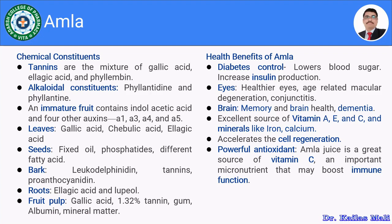Amla decreases blood sugar levels, possibly by increasing the production of insulin. Regarding eye health, it improves eyesight and prevents age-related macular degeneration as well as conjunctivitis, which is inflammation of the eyes. It is therefore useful in certain eye disorders. When considering the brain, it improves memory as well as brain health, and can be used in dementia.